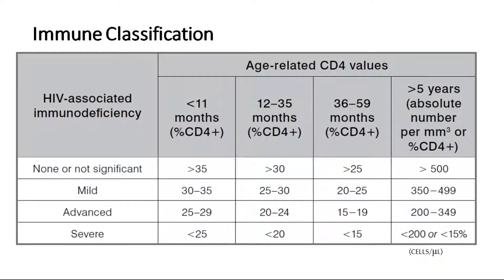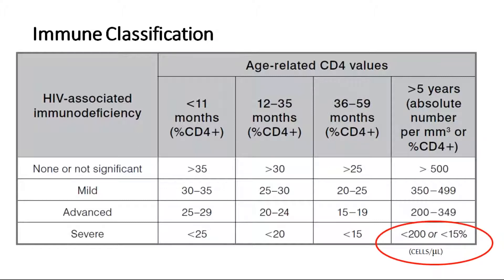Is there an immunological classification? For children above five years, it is almost like adults: whenever the CD4 count is less than 200 cells, or less than 15% of WBC, this indicates severe immunosuppression. A CD4 count of 350–400 is mild, 200–300 is advanced, and anything less than 200 is an indication of severe immunosuppression.